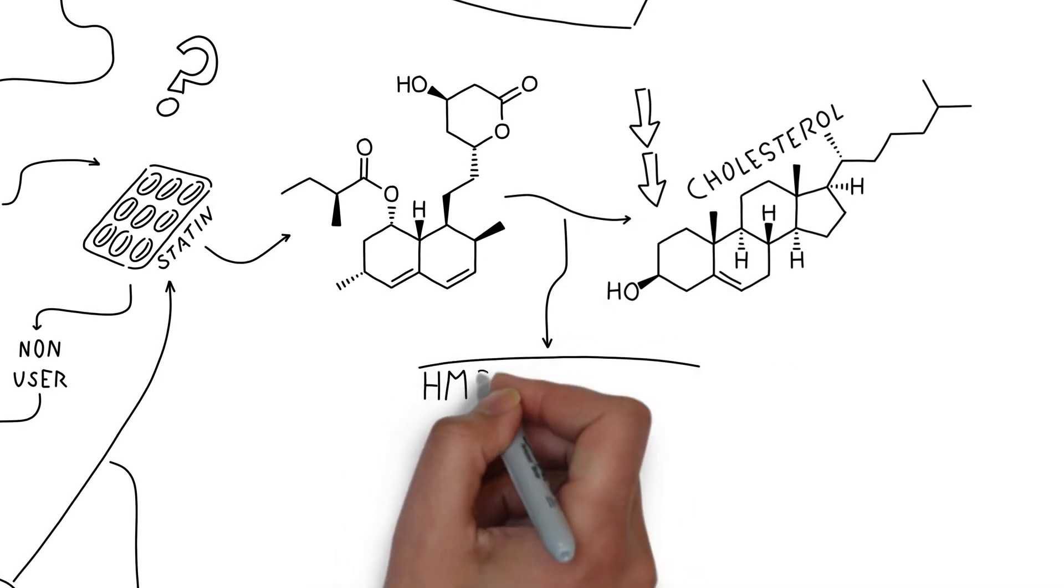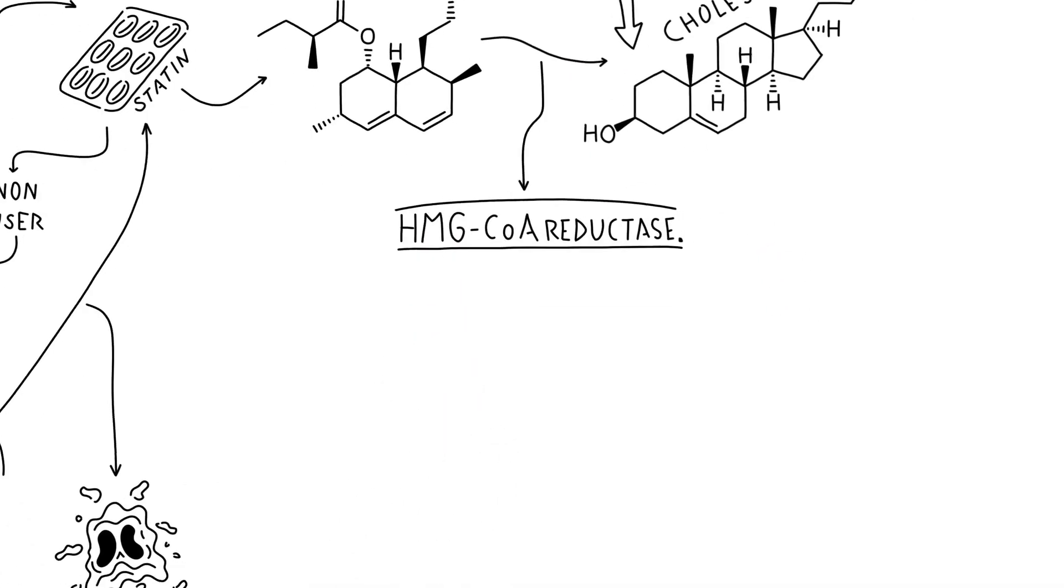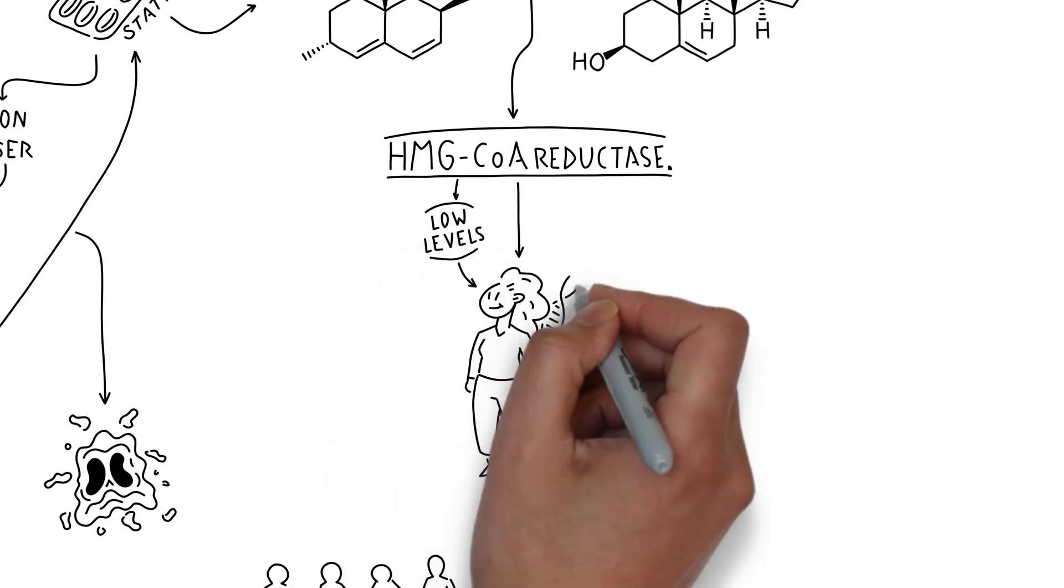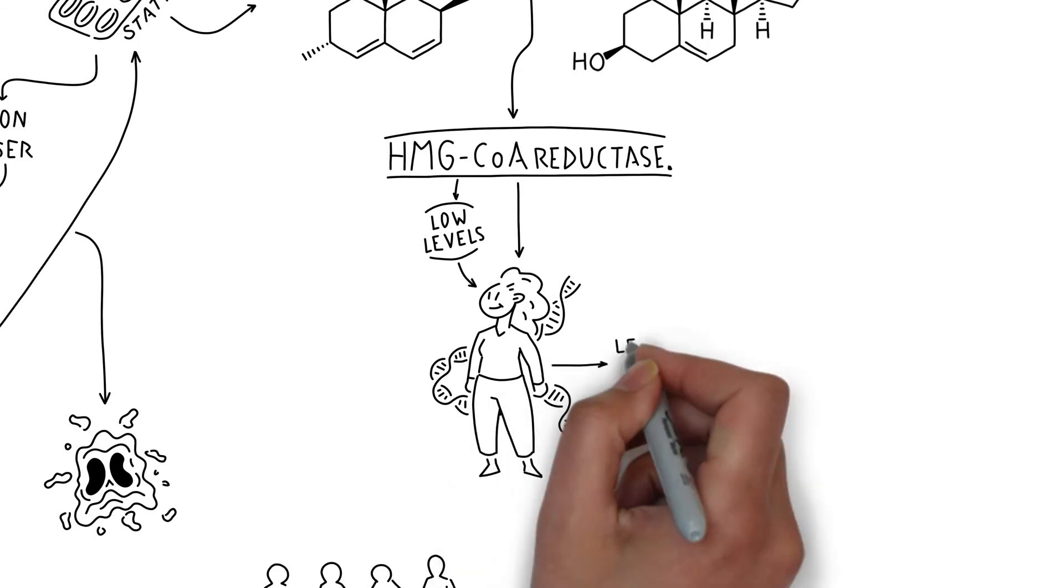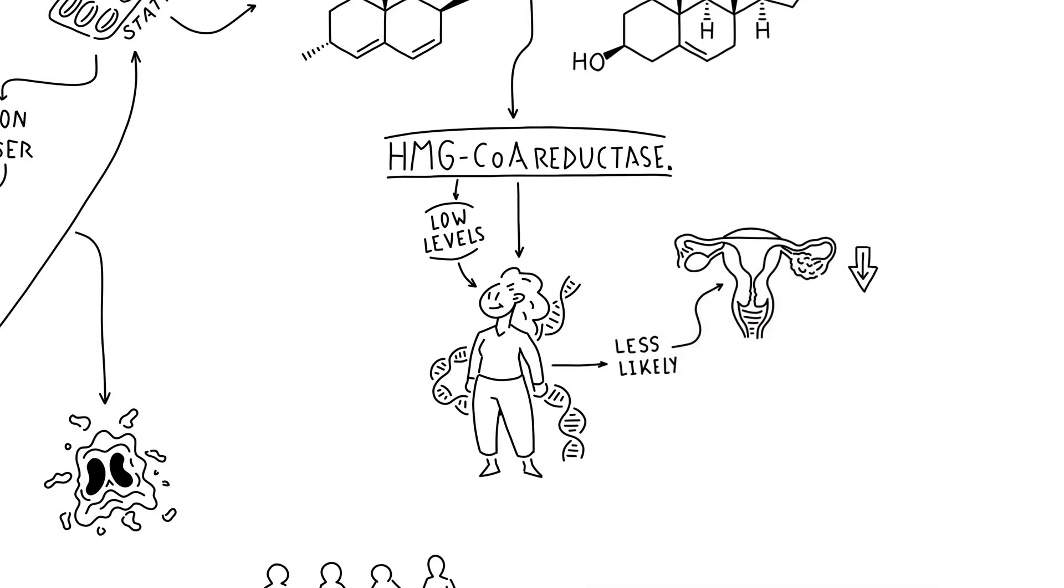Statins lower cholesterol by targeting a protein called HMG-CoA reductase. Because of their genetic predisposition, some women naturally make lower levels of this protein. And we found that these women were less likely to develop ovarian cancer.